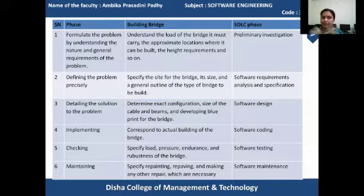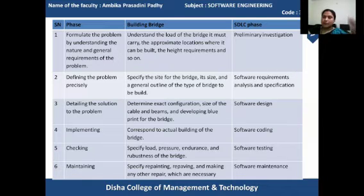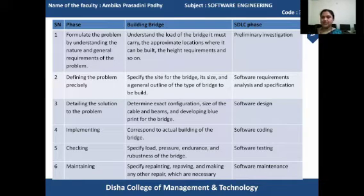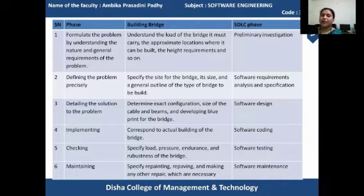Next is the implementing part. It corresponds to the actual building of the bridge — the real work starts here. All the workers and contractors are present. The mixing of cement, sand, and all the materials is done. Use of beams, cables, connecting all those — the real work is done here. This is similar to your software coding phase. A programming language is chosen according to your choice and as per the software requirement. The software coding work is done at the software coding part, where the real work is done — the conversion of the requirements into an automated system is carried out.